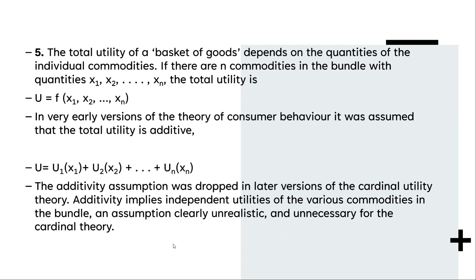The fifth assumption: the total utility of a basket of goods depends on the quantities of individual commodities. If we consider total utility, we consider a certain basket of goods, and that total utility depends on the individual commodities within it. The total utility of a bundle of commodities is derived from each of the individual commodities in that bundle.